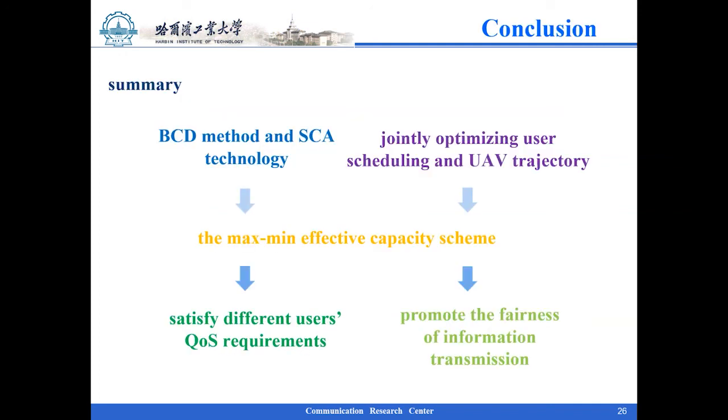The main goal of this paper was to design an effective scheme for jointly optimizing user scheduler and UAV trajectory. The proposed scheme could satisfy different users' QoS requirements while ensuring that a single user could not monopolize information transmission to indirectly promote the fairness of information transmission. Compared with the circular trajectory scheme and the fixed point trajectory scheme, the convergence and effectiveness of the proposed algorithm were verified.